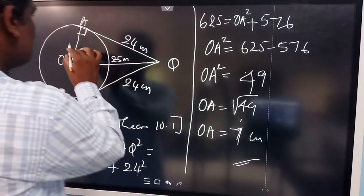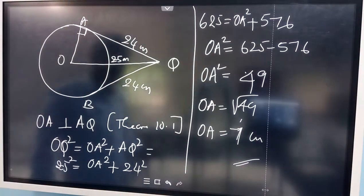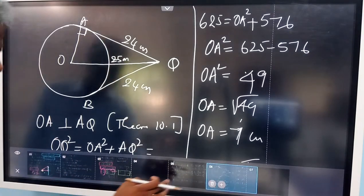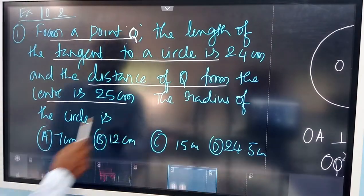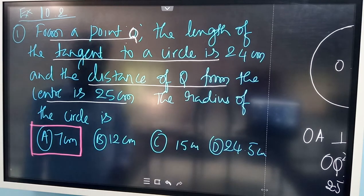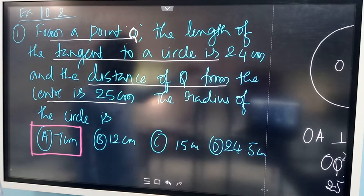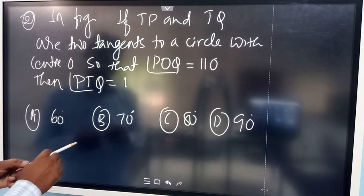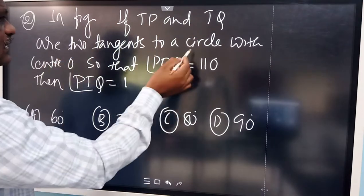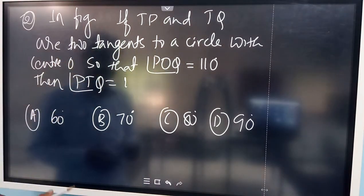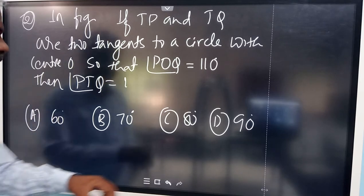So the radius OA is 7 centimeters. That is option A, the correct answer. Now the next question: TP and TQ are two tangents to a circle with center O. The angle POQ is 110 degrees — find the angle PTQ.